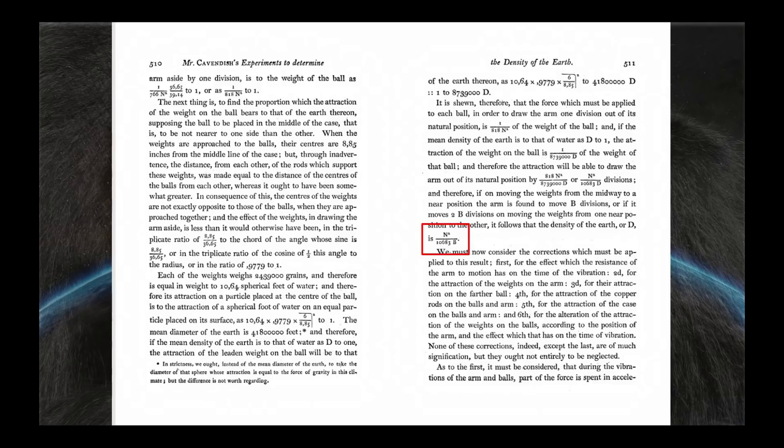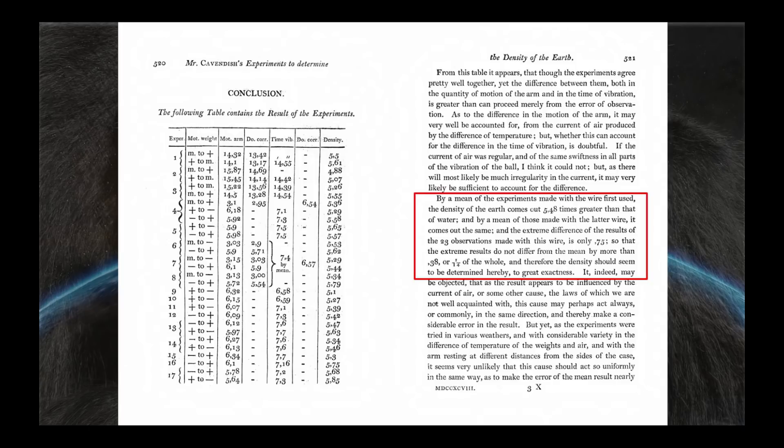And then he goes through another lengthy discussion on corrections that needed to be made for such things as the very small mass of the rod that held the two small balls and so forth. And none of that really made a big difference. But now I want to go back to the very back end of this thing. Because this is the punchline. This is it in total. Let me read this paragraph because this is everything that was determined.